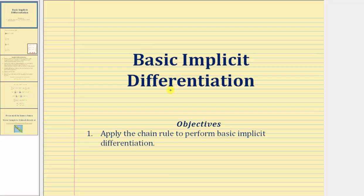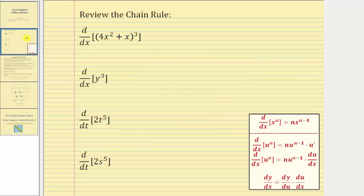Welcome to a lesson on basic implicit differentiation. In order to understand implicit differentiation, we must have a good understanding of the chain rule. Let's first review the chain rule by determining the derivative of the quantity four x squared plus x, raised to the third, with respect to x. Notice how we have a composite function here, and therefore we must apply the chain rule to find the derivative.